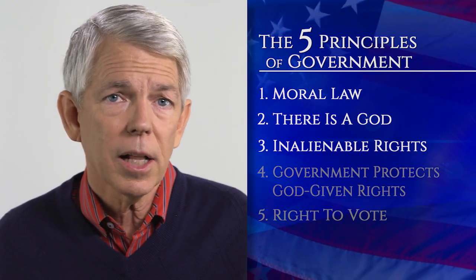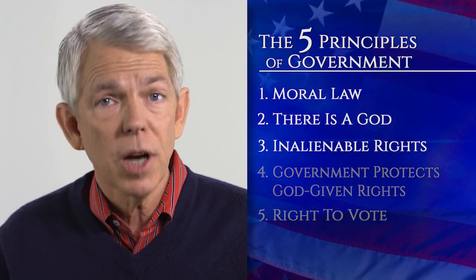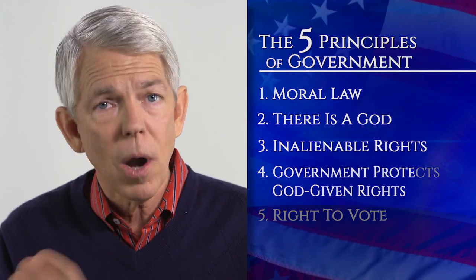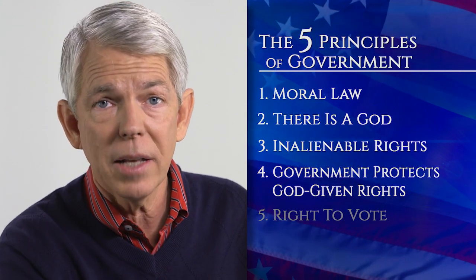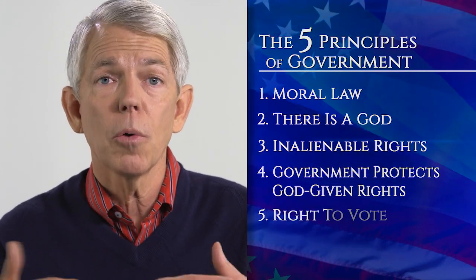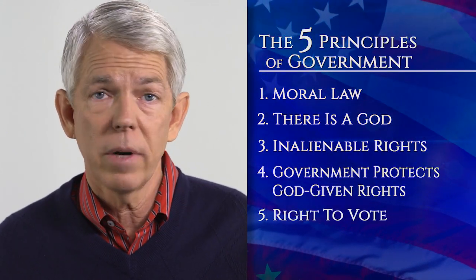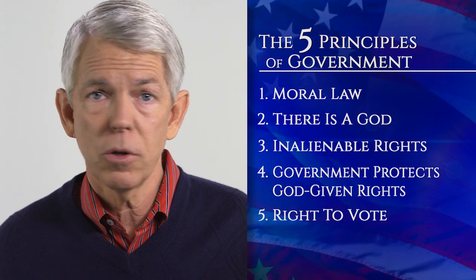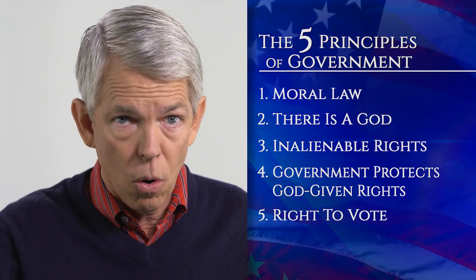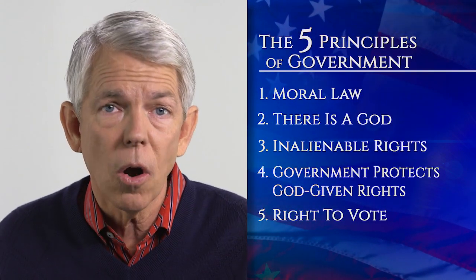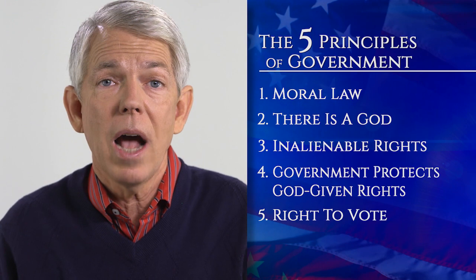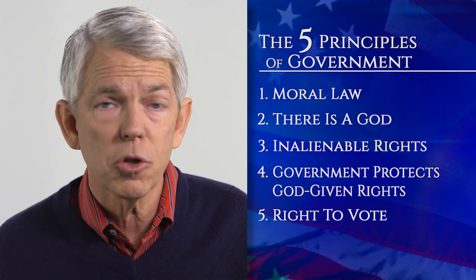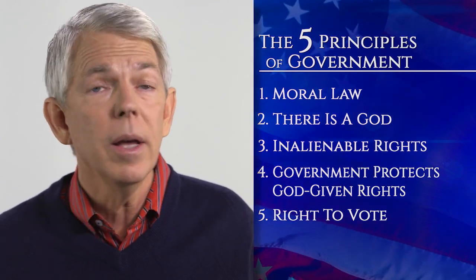The fourth thing the Declaration says is that government exists primarily to protect God-given rights. And the fifth thing is that below that, you get to vote on everything else. You don't get to vote on morals; you don't get to vote on what your rights are — God gives those to you. But you can vote on how wide the sidewalk should be or what the speed limit should be, et cetera.